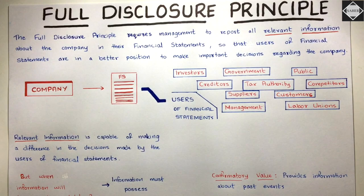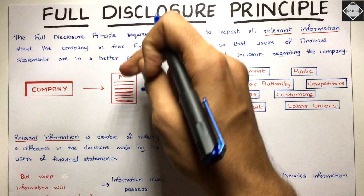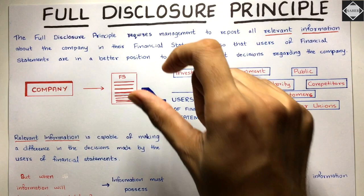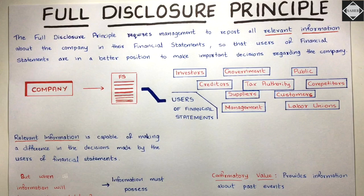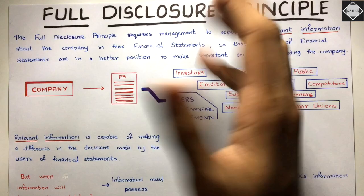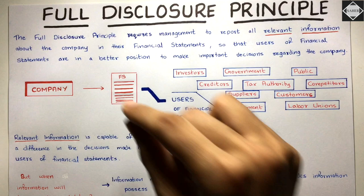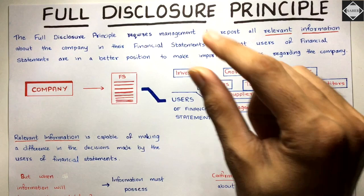He saw one piece of information which changed his decision — he decided not to invest in that company. That information was relevant because it changed the decision of that investor. If the management had not disclosed that information, they would not have followed the full disclosure principle, because that information was relevant. By disclosing it, it changed the mind of the investor — so it was a relevant information.